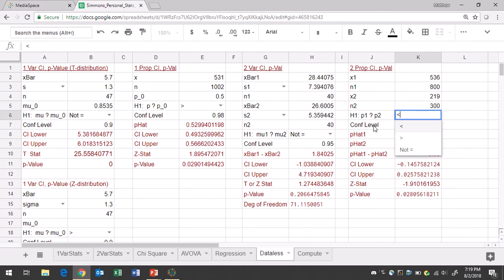And then you just need to type in your confidence level of 0.98. And you can see that your lower limit is negative 0.13 and your upper limit is 0.01.